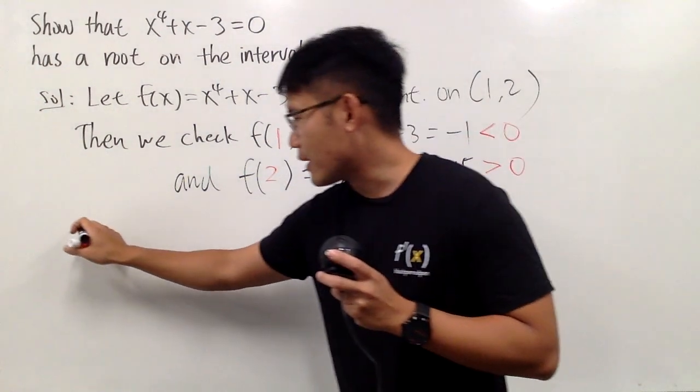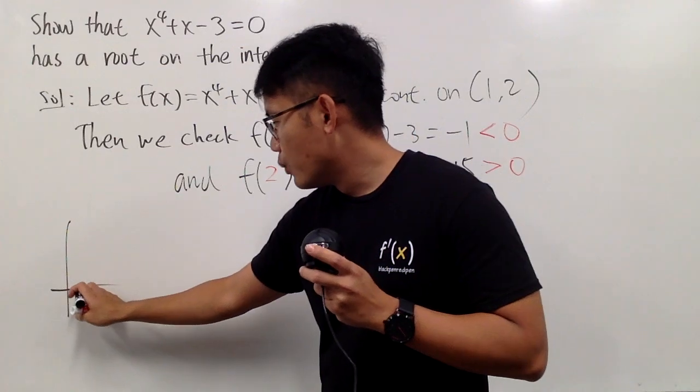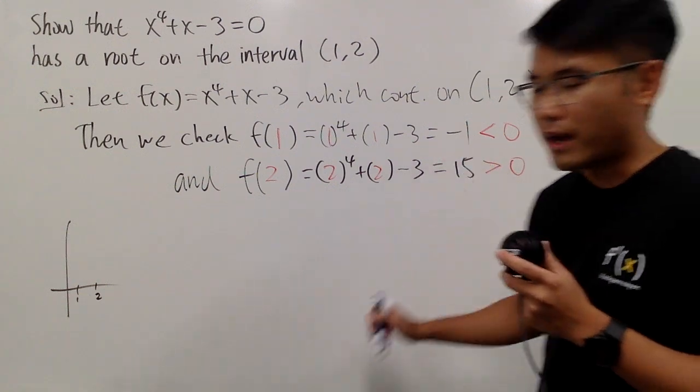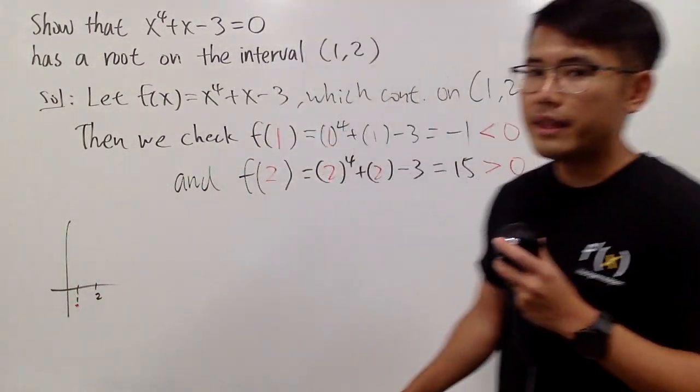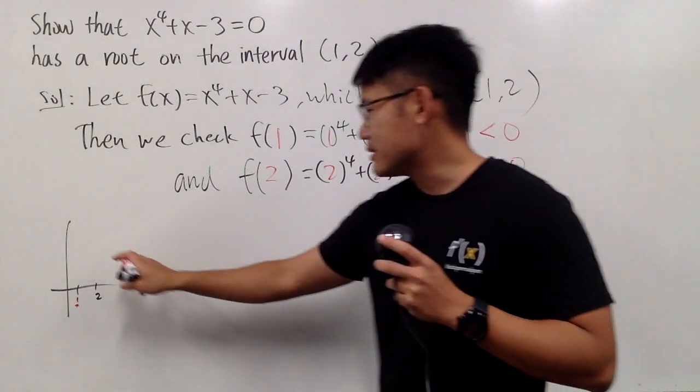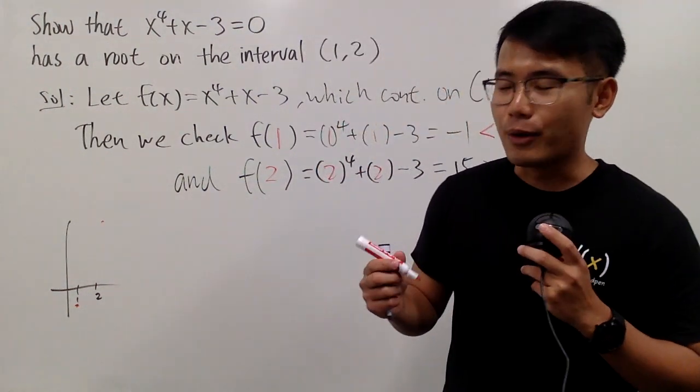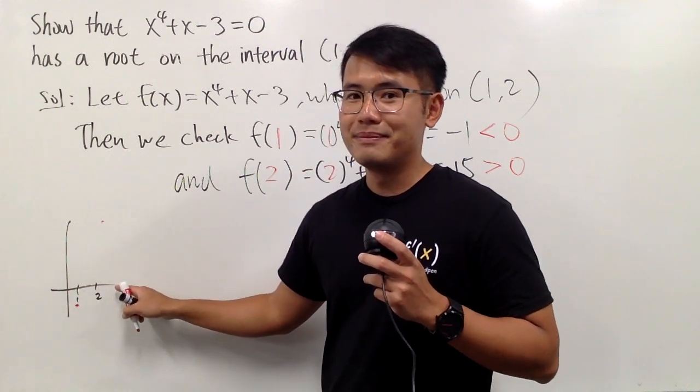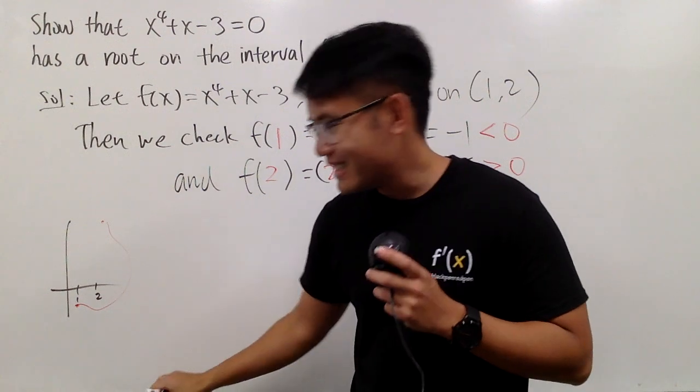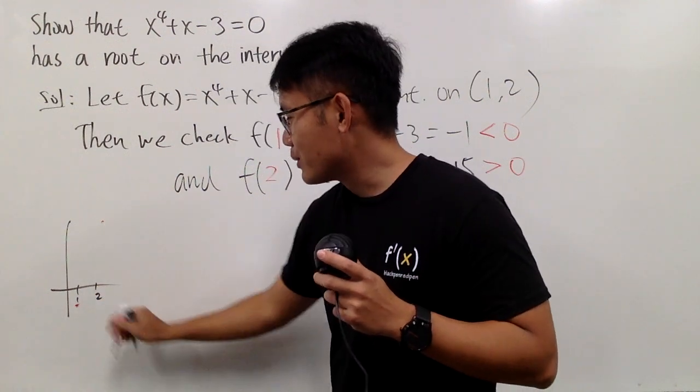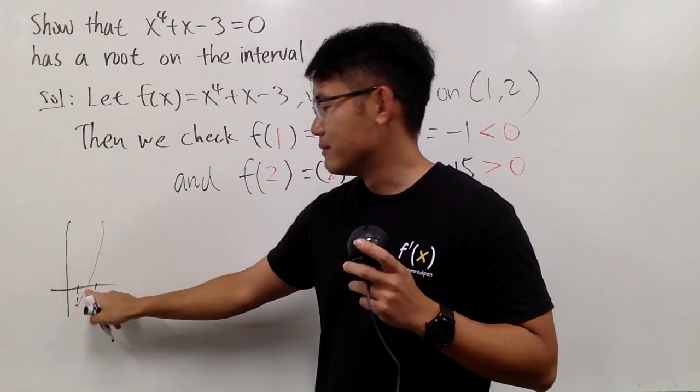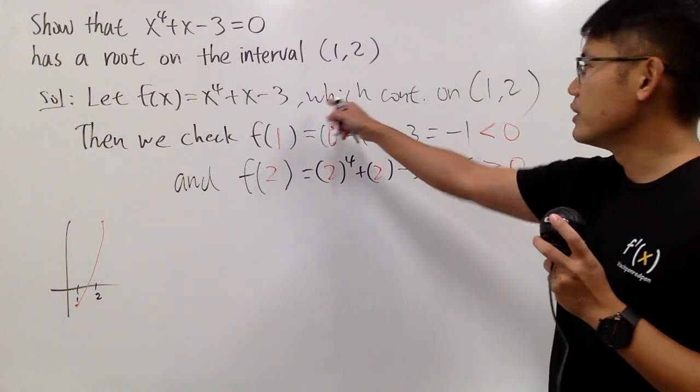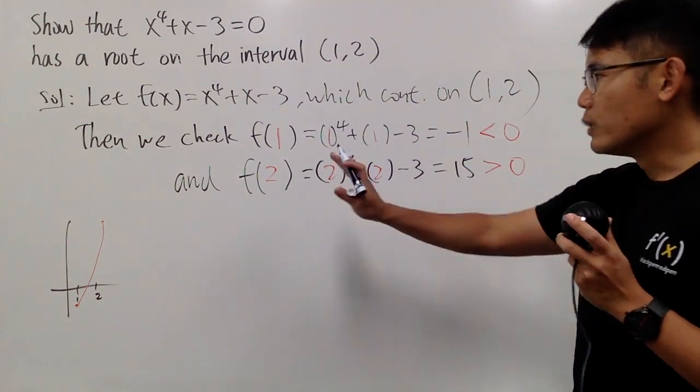You have a continuous function. Let me just make a sketch real quick. 1 and 2 right here. When x is equal to 1, the y value is negative 1, so it's down here maybe. And when x is 2, the y value is 15, so maybe it's up here, right? And now, is it possible for us to go from this point to that point without crossing the x-axis? Well, can we do this? No, right? So we must be able to cross the x-axis somewhere in between for 1 and 2. And we can be sure why this is the case. It's because the function is continuous.